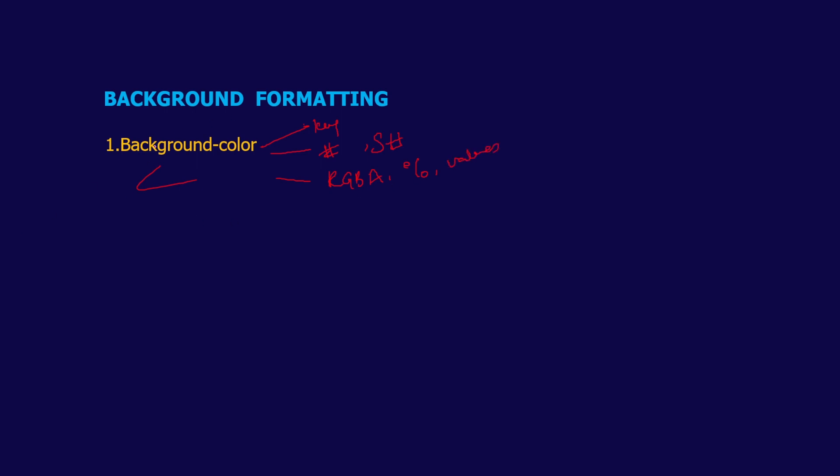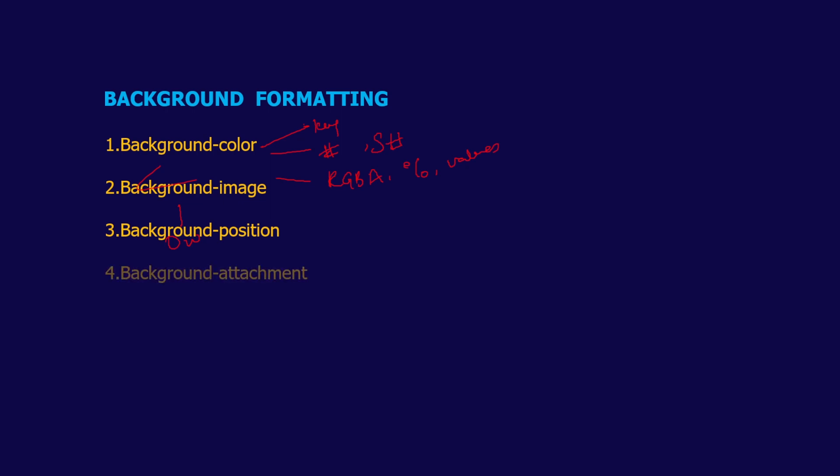The next one is background image. For background image, you can use an online image or an offline image. The next one is background position, which sets the starting position of your background image. By default, the background image is placed at the top left corner of an element and repeated both vertically and horizontally. Next is background attachment, which determines whether the background image should scroll with the rest of the page or be fixed. The default value is to scroll with the content.